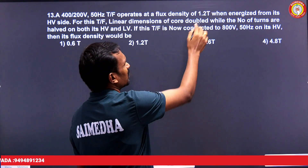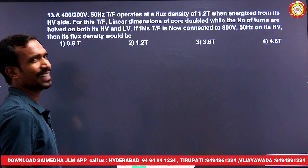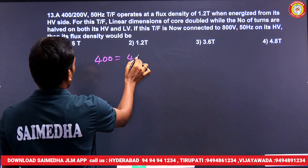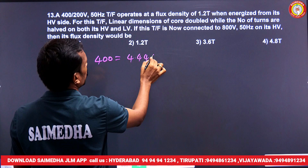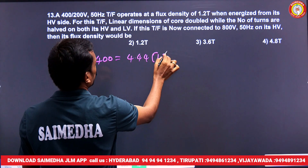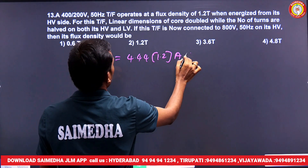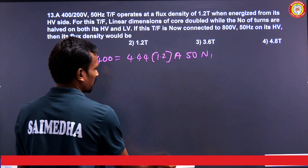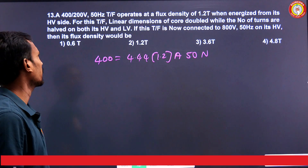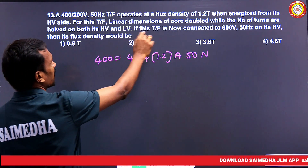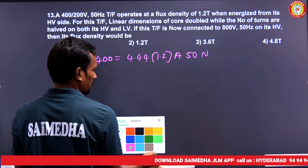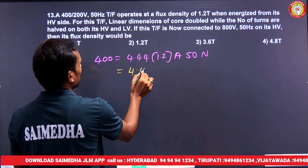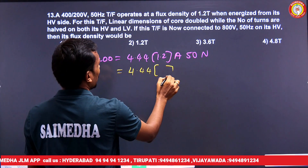Next question: a 400/200 volt, 50 Hz transformer operates at a flux density of 1.2 Tesla when energized from its HV side. The EMF equation is E1 = 4.44 × flux density 1.2 × area A × frequency F × N1. Now the linear dimensions of the transformer are doubled. When the linear dimensions are doubled, the area becomes four times.